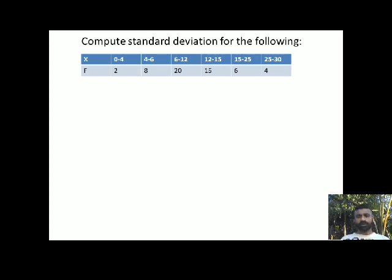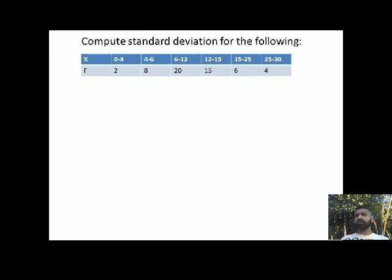For the first class interval 0 to 4, the class width is 4. For 4 to 6, the width is 2. For 6 to 12, the width is 6. The class widths are not equal. Since I am following the class interval approach and the class widths are not the same, I certainly have to follow the deviation method.